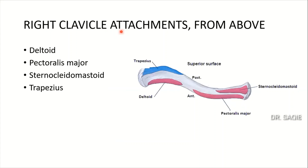Regarding attachments viewed from above: on the anterior border is the deltoid attachment, and on the posterior border is the trapezius attachment. Pectoralis major attaches to the anterior surface of the medial two-thirds of the clavicle, and sternocleidomastoid attaches to the medial half of the rough superior surface.